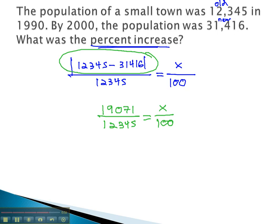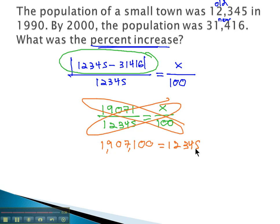And we now have a proportion we can solve. Multiply the diagonals. We get 1,970,907,100 equals 12,345x.